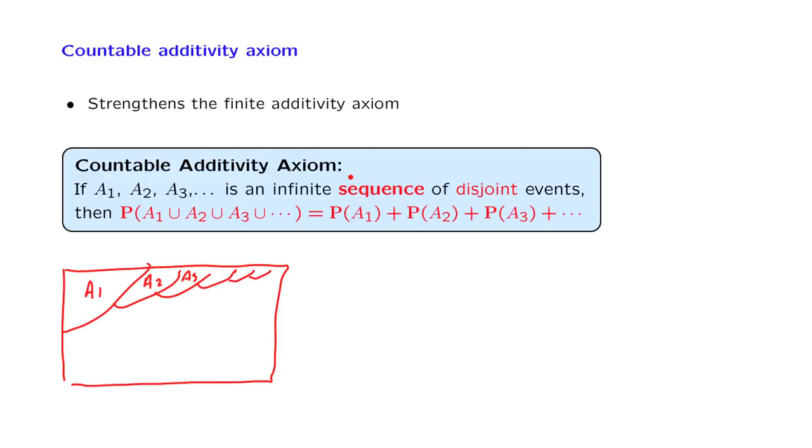The key word here is the word sequence. Namely, these events, these sets that we're dealing with, can be arranged so that we can talk about the first event, A1, the second event,